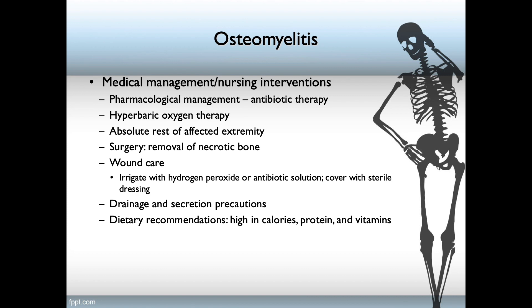Bone marrow is a different animal. Hyperbaric oxygen therapy has shown a lot of promise in preventing bone loss. Absolute rest of the affected extremity. In some cases, the infection kills off the bone, causing necrosis, and surgical removal is then required. You need to irrigate the wound with hydrogen peroxide or an antibiotic solution and cover with a sterile dressing. Maintain drainage and secretion precautions. Dietary recommendations should be a diet high in calories, high in proteins, and with vitamins, particularly vitamin D.